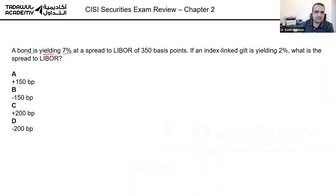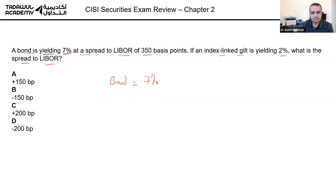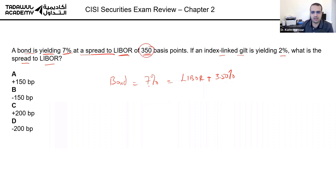A bond is yielding seven percent at a spread to LIBOR of 350 basis points. If an index-linked gilt is yielding two percent, what is the spread to LIBOR? The bond yield is seven percent and the spread between it and LIBOR is 3.5 percent, meaning this bond yielding seven percent is LIBOR plus 350 basis points. Therefore LIBOR is automatically yielding 3.5 percent.